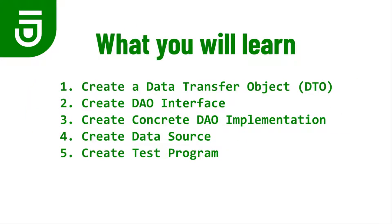Here's how I'm going to approach this tutorial series. First, we'll learn how to create a DTO or data transfer object. Second, we'll create a data access object interface. Third, we'll create a concrete implementation of that data access object interface. Fourth, we'll create a data source so that we can connect to our database. And fifth, we're going to create a test program to test all of the individual parts of the data access object interface.